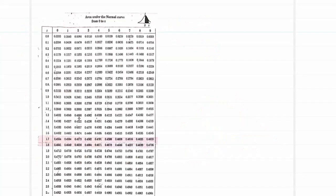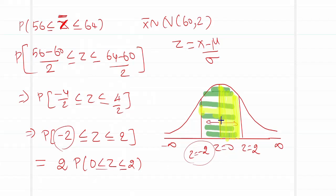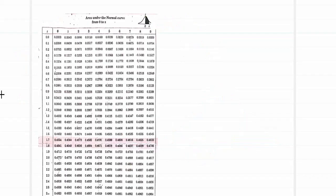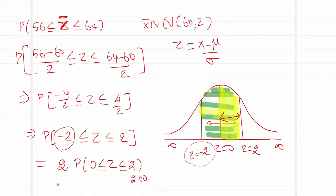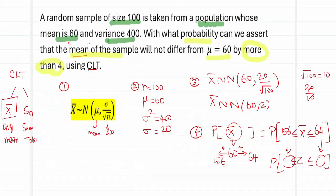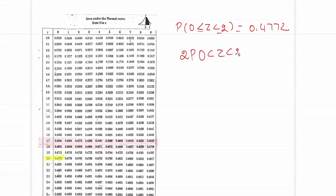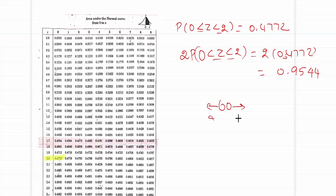Go to the table and get the value for 0 to 2. The value 2 can be considered as 2.00. Search for 2.0 in the table with the second decimal 0. The table value is 0.4772. Therefore, P(0 < Z < 2) = 0.4772. Our requirement is 2 times this quantity, so 2 × 0.4772 = 0.9544. This completes the problem — the probability that the sample mean will not deviate from 60 by more than 4 is 0.9544.